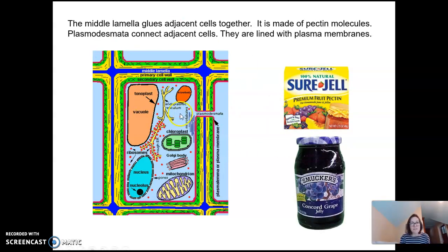Plasmodesmata are these little tunnels that connect cells to each other. These are lined with plasma membranes and these help a plant to communicate with cell to cell communication and to exchange other types of molecules. So plasmodesmata, really important for plant cells.